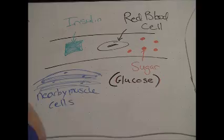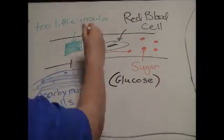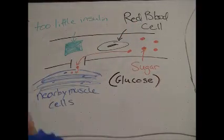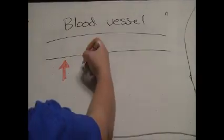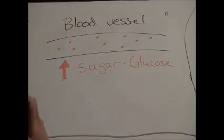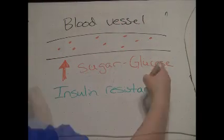When sugar levels in the blood get too high and the body doesn't respond normally to the insulin, this results in elevated levels of glucose in the blood and is often called insulin resistance, or type 2 diabetes.